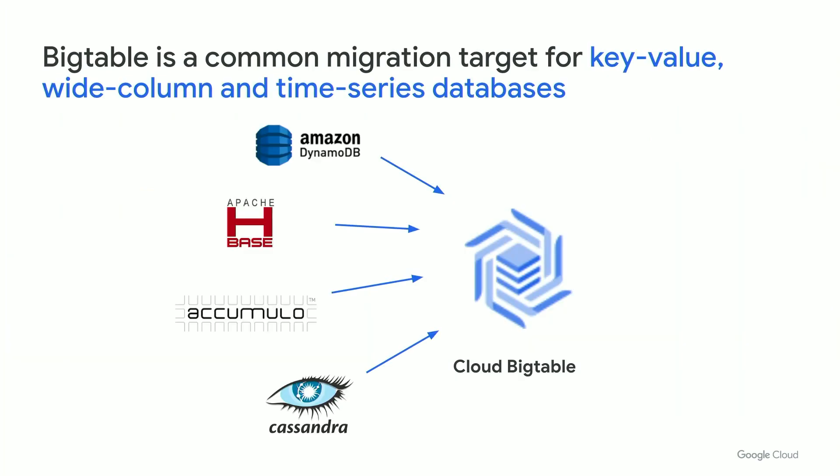The next place where Bigtable really comes up today — which Box will talk more about — are migrations and modernizing NoSQL workloads. We're seeing many migrations to Cloud Bigtable come from HBase and Cassandra today, although we have supported migrations from other databases including DynamoDB, Cosmos DB, and even MySQL and Oracle. Bigtable is a great fit for workloads that are key value, like queries with a single row of data or a range of rows, as well as wide column and time series use cases.